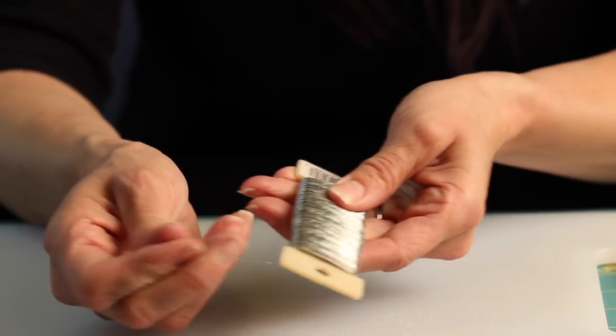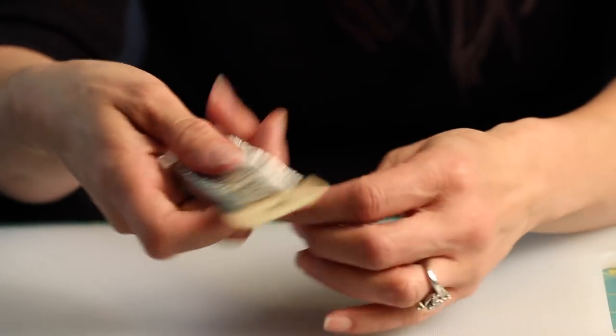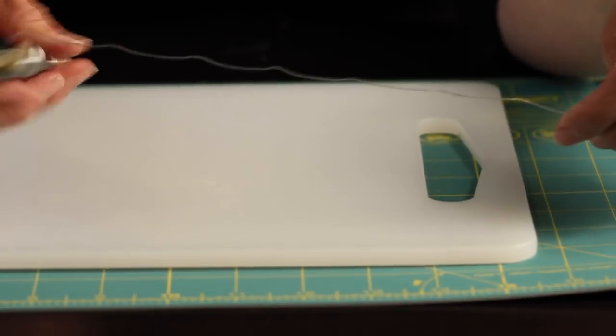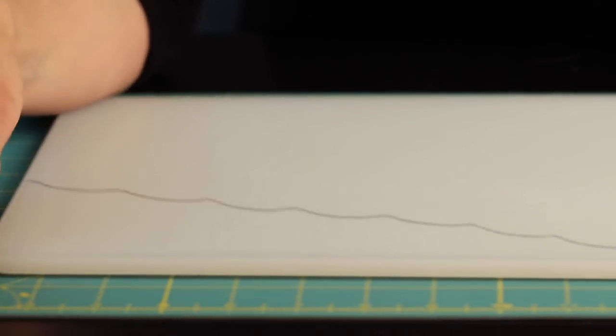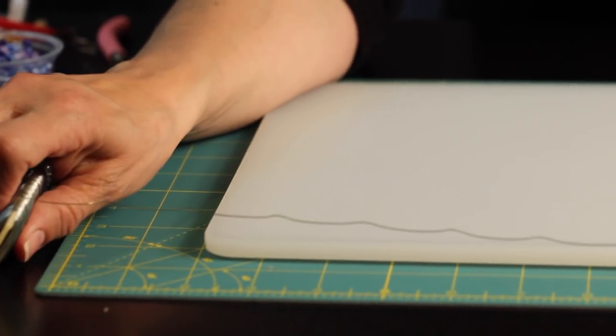The first step is to measure out about 25 inches of our wire. This doesn't need to be exact. We're measuring out a little bit extra so we have room to move the beads around.